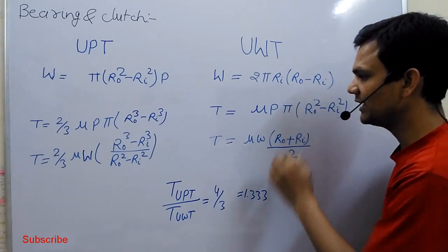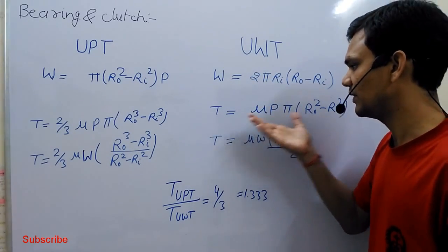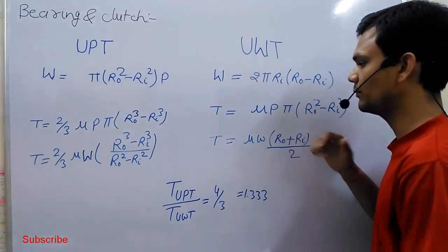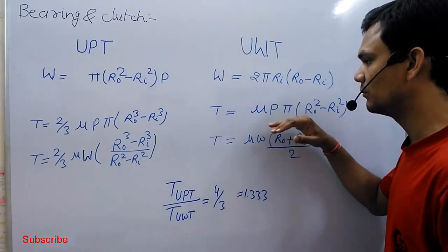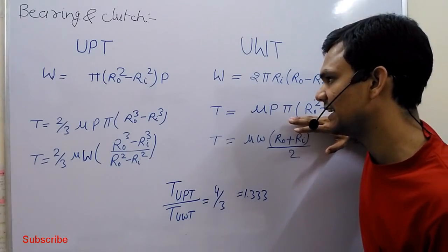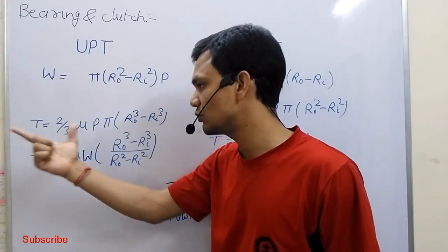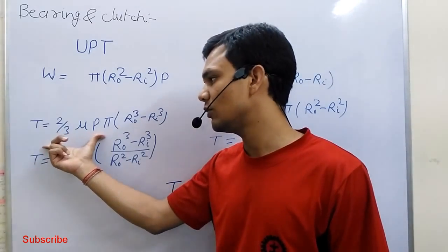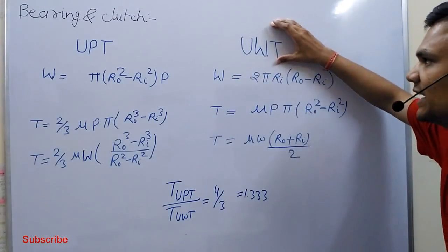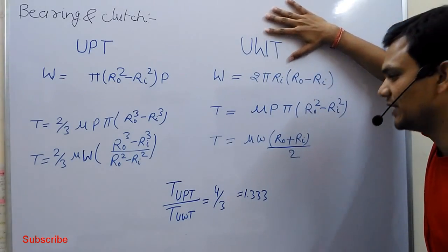We calculate how much friction can transmit the power. Obviously, if it can transmit power with less friction in uniform wear theory, then obviously it can also transmit power in the case of uniform pressure theory where frictional torque is more. So we generally prefer to design the clutch by uniform wear theory.